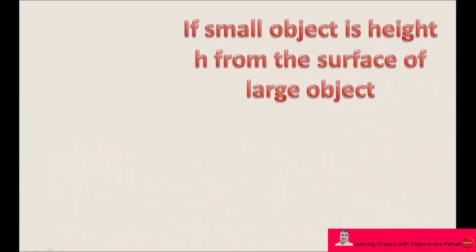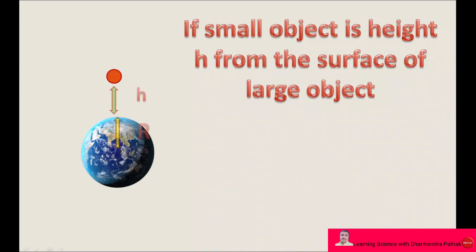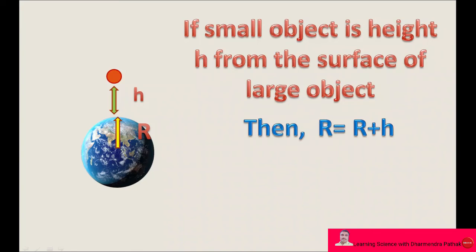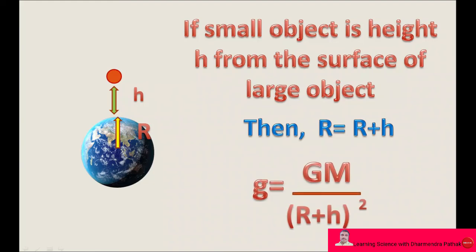If a small object is at height h from the surface of a large object, and the radius of the large object or the earth is R, then the radius R becomes R plus h. Hence, acceleration due to gravity g equals GM upon (R plus h) square.